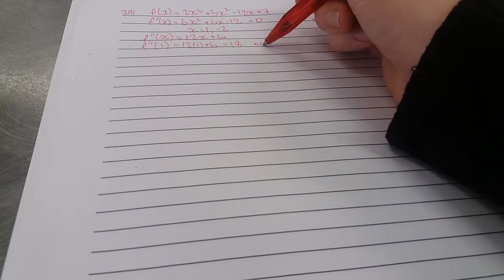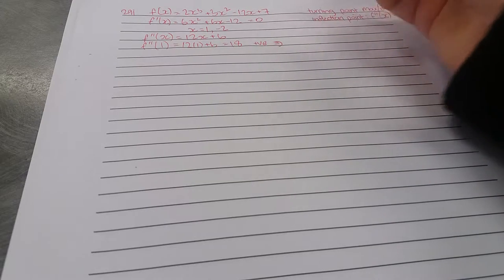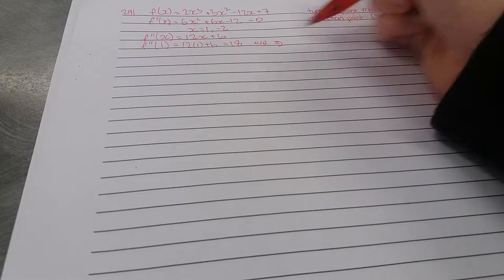Finding the second derivative, we've got 12x + 6. So f''(1) is 12 times 1 plus 6, which is 18. So that's positive, which means it is a minimum.